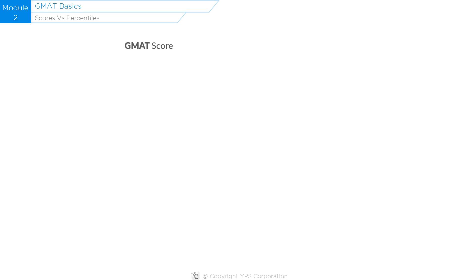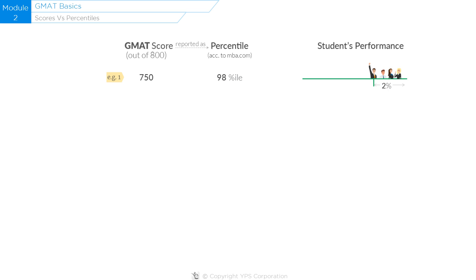A GMAT score out of 800 is reported as a percentile. For example, let's take a student who scored 750. According to MBA.com, the official GMAT website, 750 corresponds to a 98th percentile ranking. This implies that only 2% of people who took the GMAT did better than this student, or in other words, this student did better than 98% of test-takers.